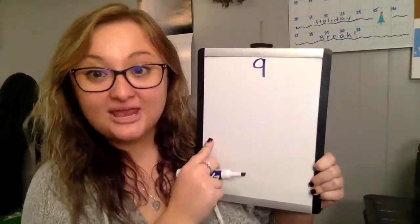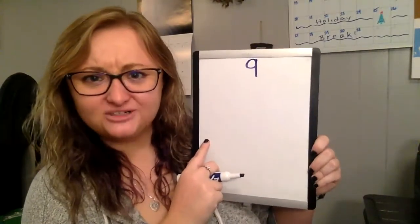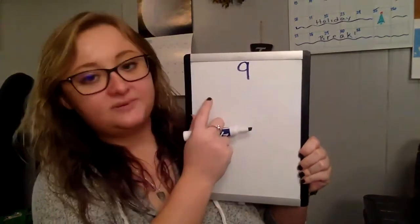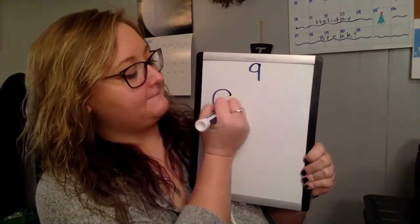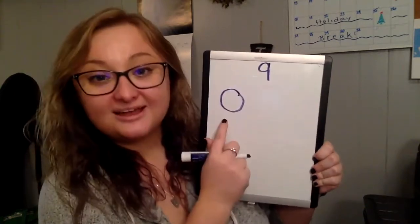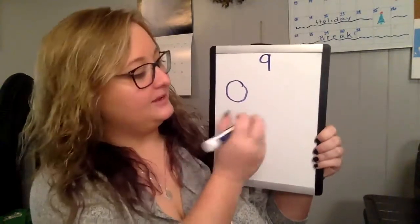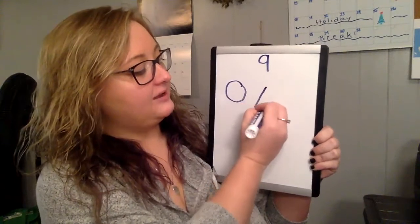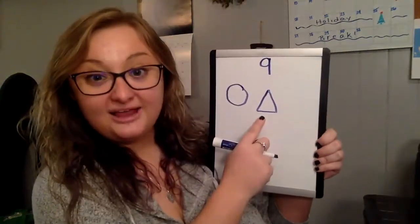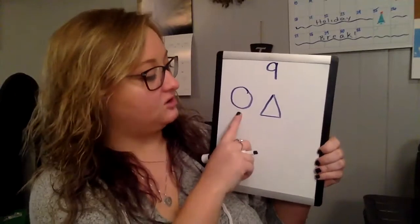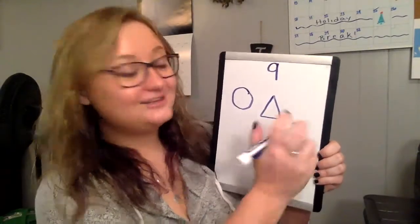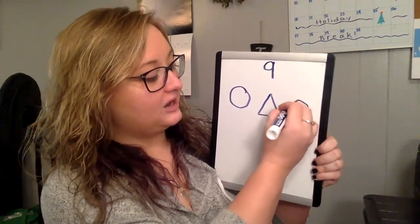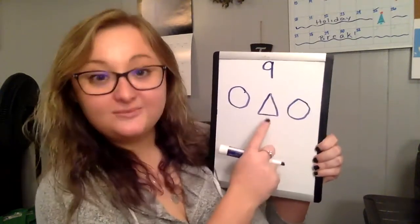We're gonna draw some shapes and make some patterns, okay? So we're gonna start up here on the left side and we're gonna draw a circle. Good job. And then we're gonna draw a triangle. So if we're doing a pattern, we do circle, triangle. What'll come next? Circle. Good job. There's one pattern.